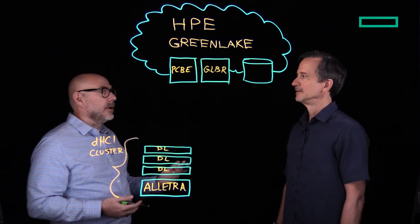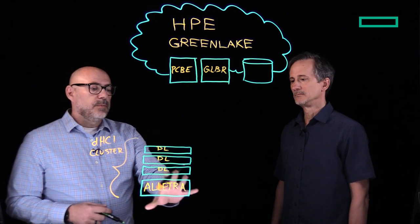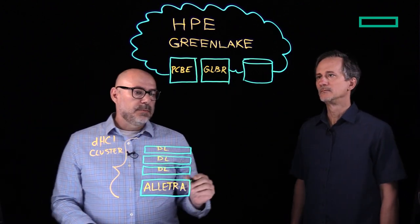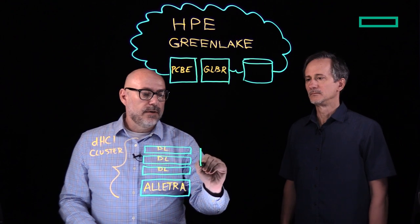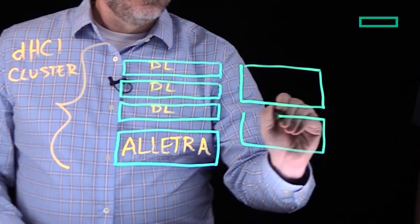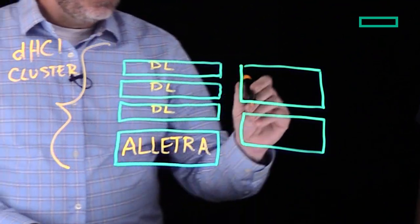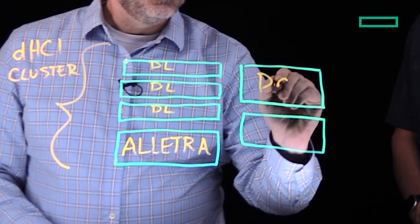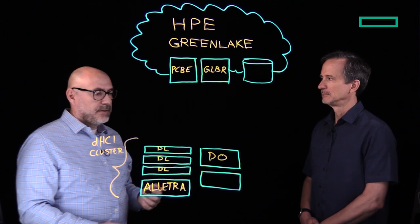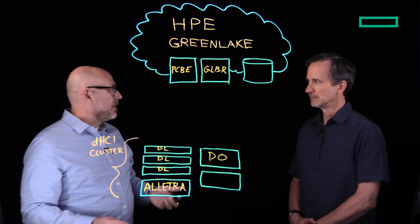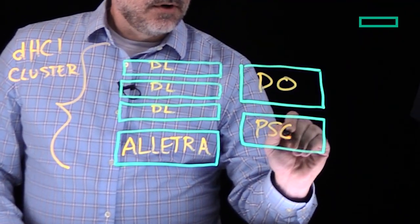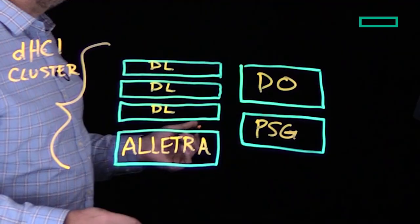We've already got our on-prem components for PCBE. We've got a couple more that we're going to deploy specifically to support GreenLake for Backup and Recovery. The first of those is something we call a Data Orchestrator, or DO — it's kind of like a traffic cop for all the backup traffic that's occurring. It manages the schedules and things along those lines. The other is a Protection Store Gateway, or PSG for short.